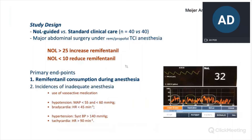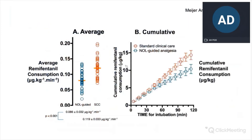These are the results. On the left, we show the mean remifentanil consumption per patient — there were 80 patients in this study. In the NOL-guided group, remifentanil consumption decreased by 30%, which was highly significant. On the right, you can see the evolution of remifentanil consumption during the case over the first two hours. Already early on, there is a difference in remifentanil consumption in patients receiving NOL-guided analgesia, a difference that increases over time.